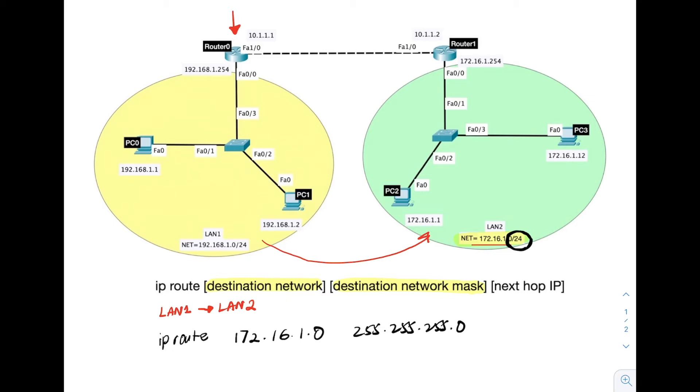The last parameter is the next hop IP address. The next hop IP is the IP address of the interface on the next hop router. Next hop basically means the next router that router 0 will forward the packet to.